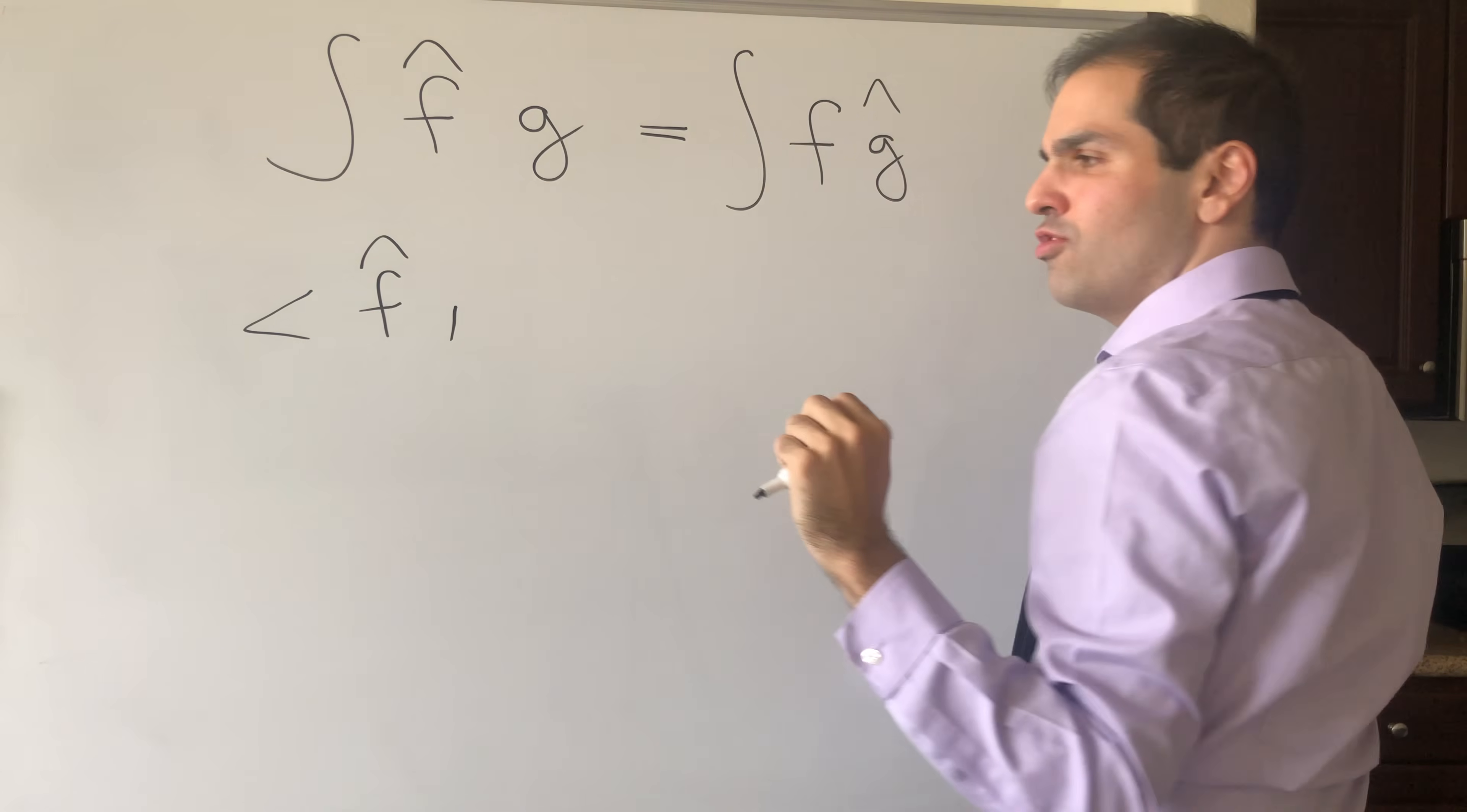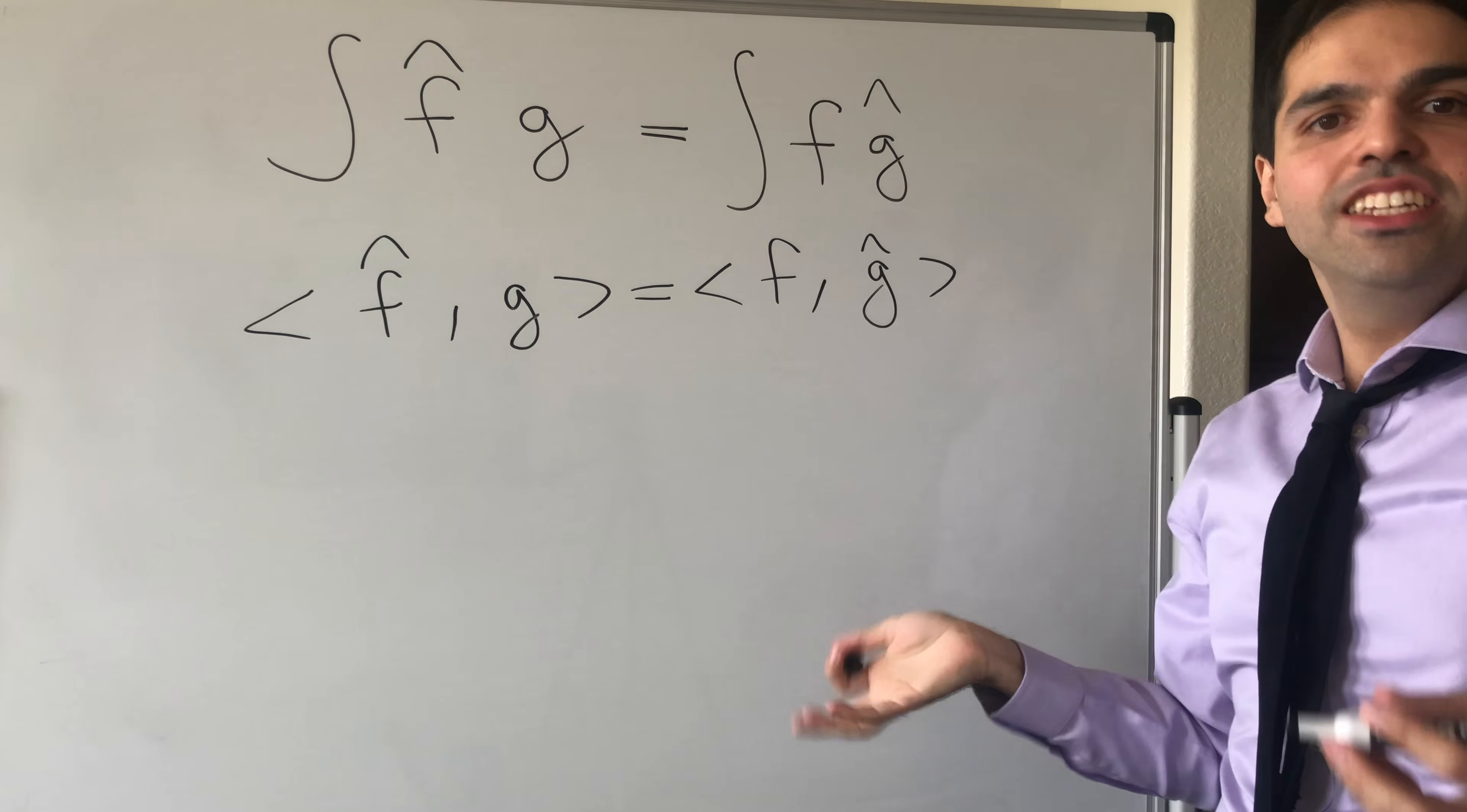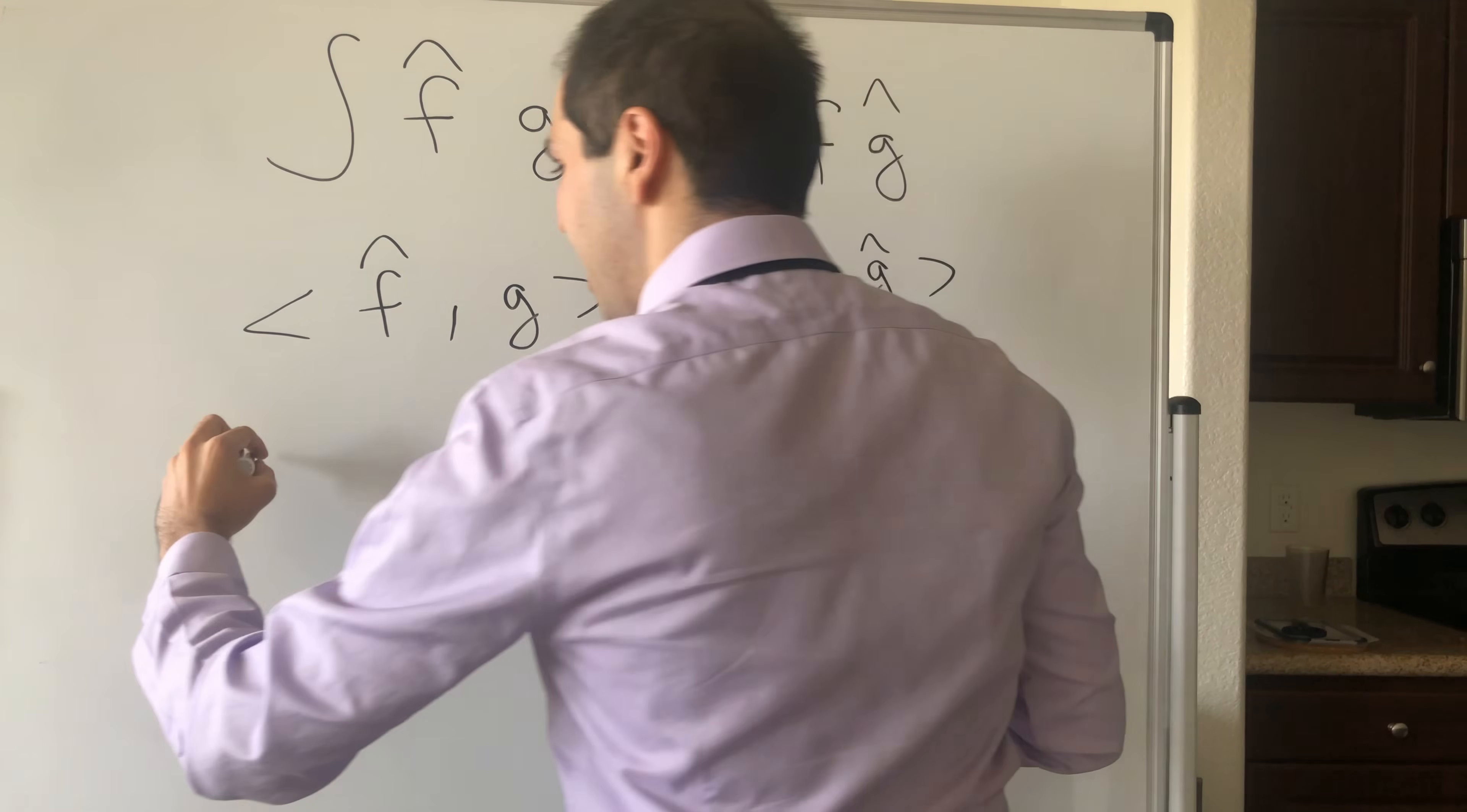And this allows us to define the Fourier transform of a distribution, namely the Fourier transform of f, where f is a distribution. It just takes functions g as an input and spits out the original distribution but applied to the Fourier transform of g. And we'll define g such that g hat exists, so this is what's called a Schwartz space, which not to be confused with the German Schwarz, but so functions g such that this Fourier transform is defined, and we can apply this to the Dirac delta.